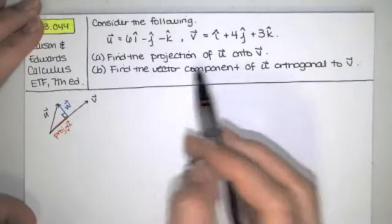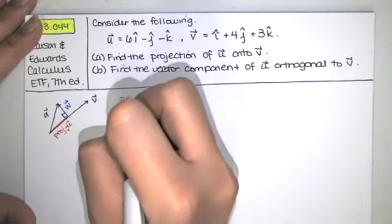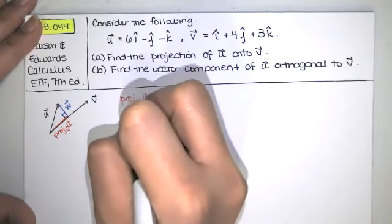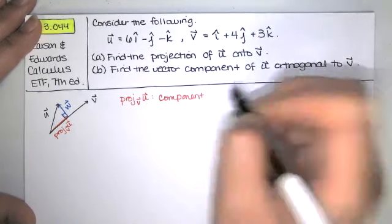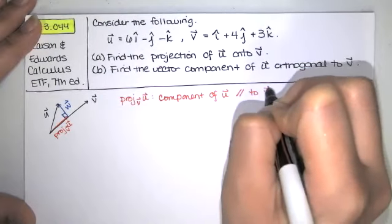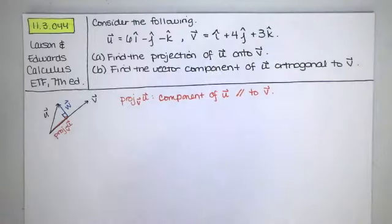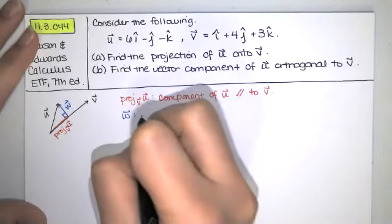And we've been labeling that w in our class. So when they're asking you for the projection of u onto v, what they're asking you for is the vector component of u that is parallel to v. And they're asking you for the vector component of u orthogonal to v. That's w.